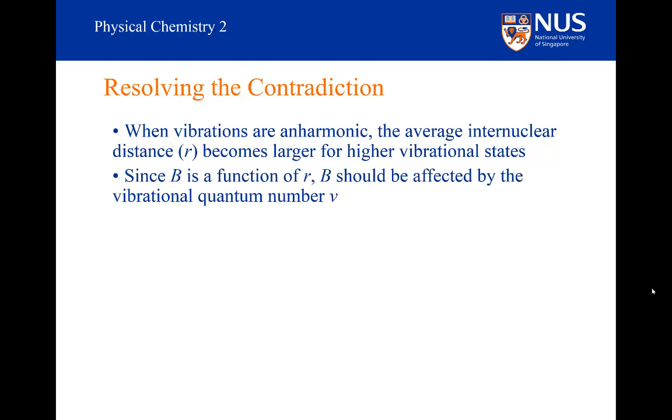From our study of rotational spectra, we know how the bond length affects the rotational constant. The rotational constant is inversely proportional to the moment of inertia, which is itself proportional to the square of the bond length. Therefore, the rotational constant is inversely proportional to the bond length squared. If the bond length is getting larger, the rotational constant is getting smaller.